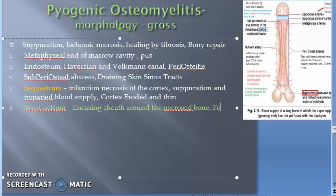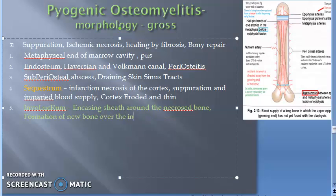The Involucrum is the formation of new bone beneath the periosteum. So beneath the periosteum, or inside it, there is formation of new bone over the infected bone. This is the encasing sheath around the necrosed bone, and we are calling it Involucrum.